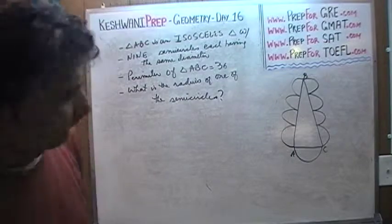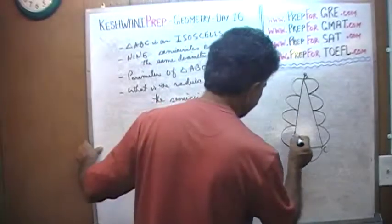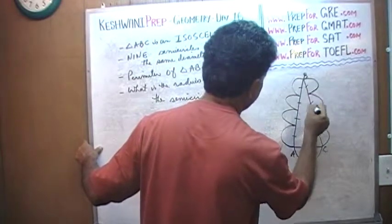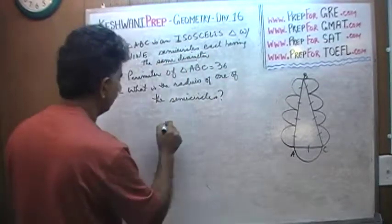Very good. As I said, very straightforward problem. There are 9 diameters: 1, 2, 3, 4, 5, 6, 7, 8, and 9. And they are of the same diameter. 9 of them.